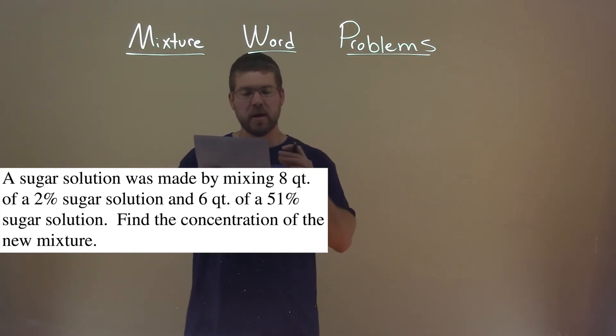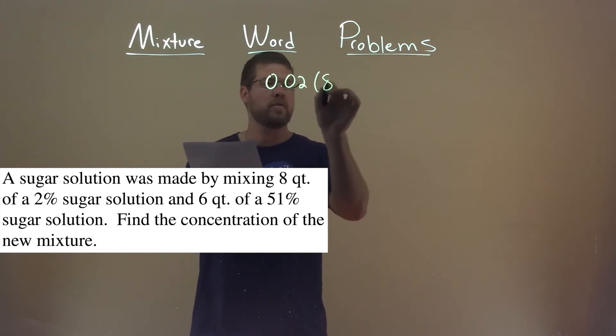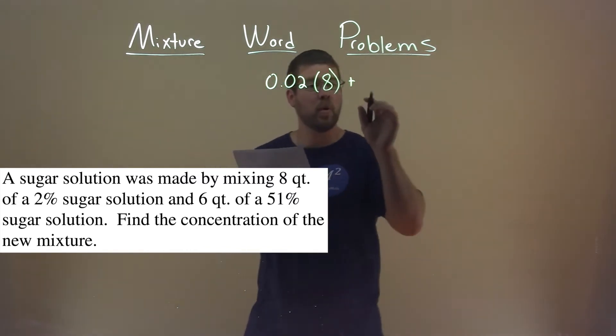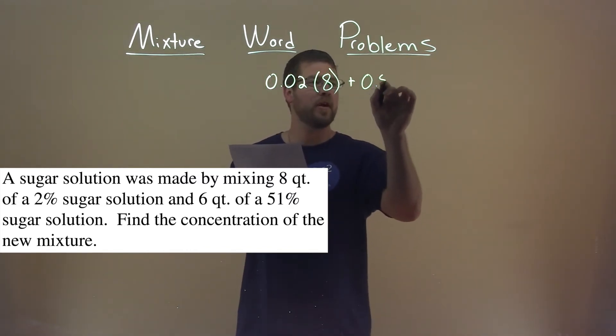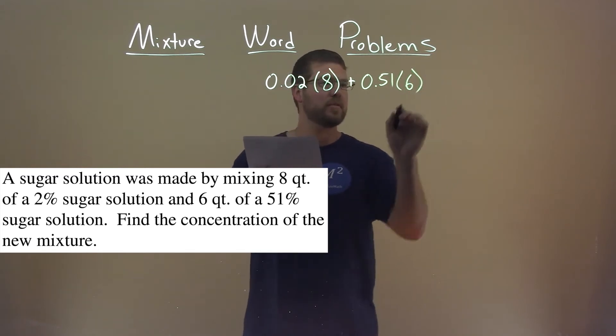The first part here, we have an 8-quart version, and it's at 2%. So 2% as a decimal is 0.02, and we have 8 quarts of that. We're combining that with a solution that's 51%, so 0.51 of the sugar solution, and we have 6 quarts of that.